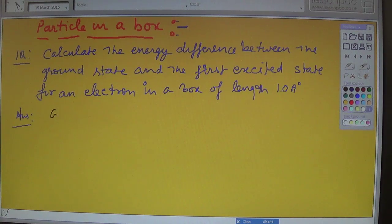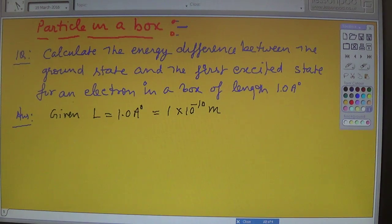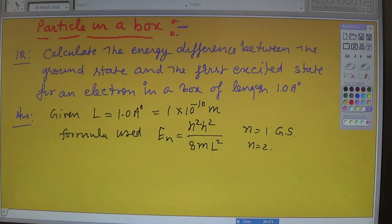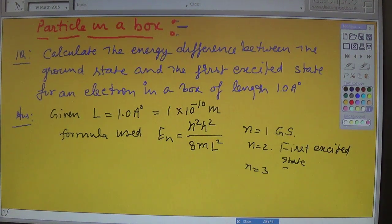Given L equals one angstrom, which is one times ten raised power minus ten meters. The formula we have to use here is En equals n square h square upon eight m L square, where n is the state. N equals one means ground state, n equals two means first excited state, and n equals three means second excited state.